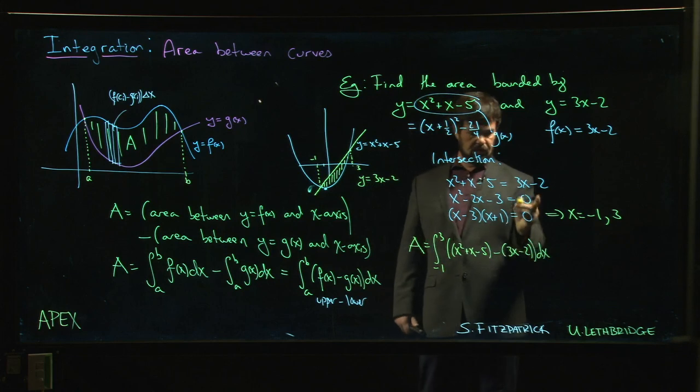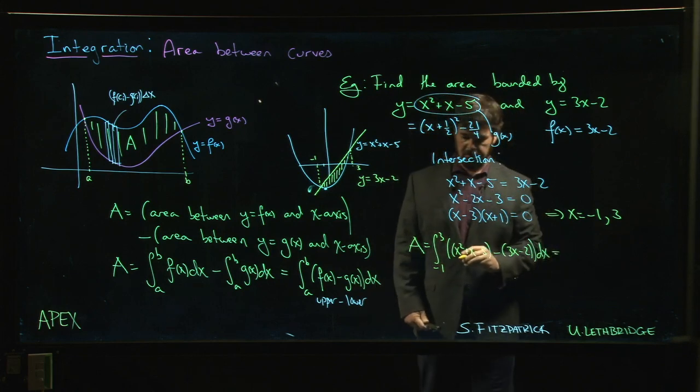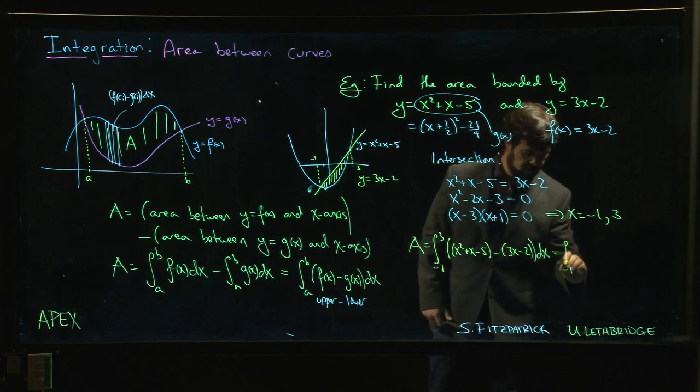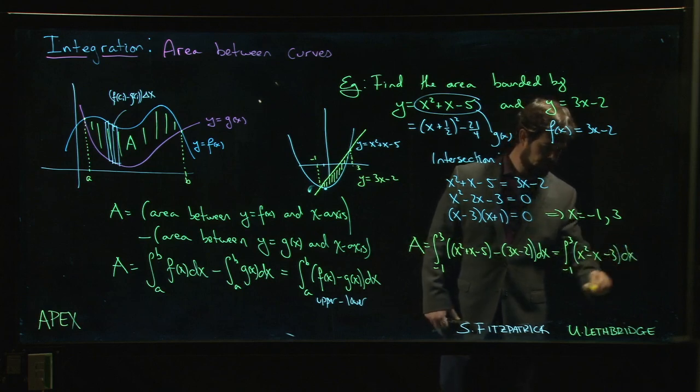And of course when you do this subtraction, we've actually already done that subtraction once when we tried to solve for the intersection points. We have x² - 2x - 3.